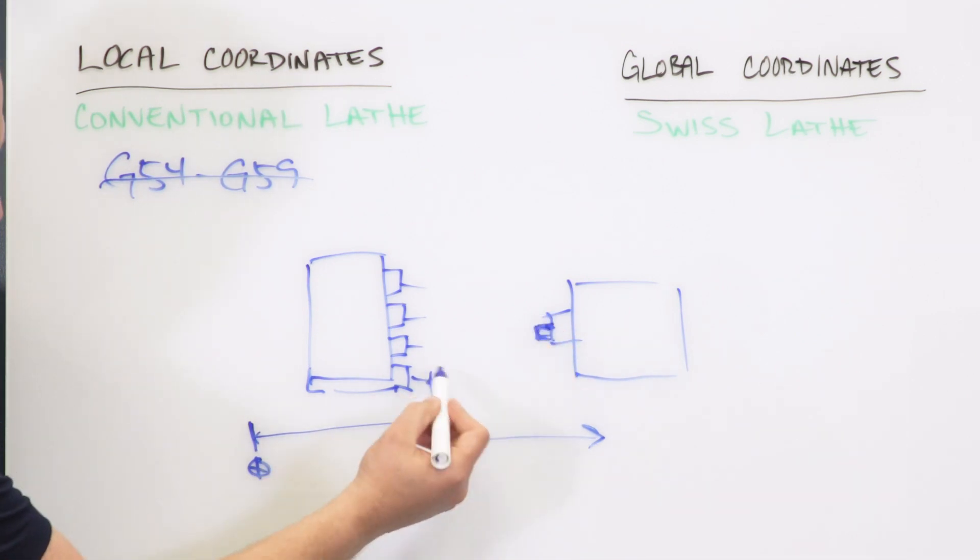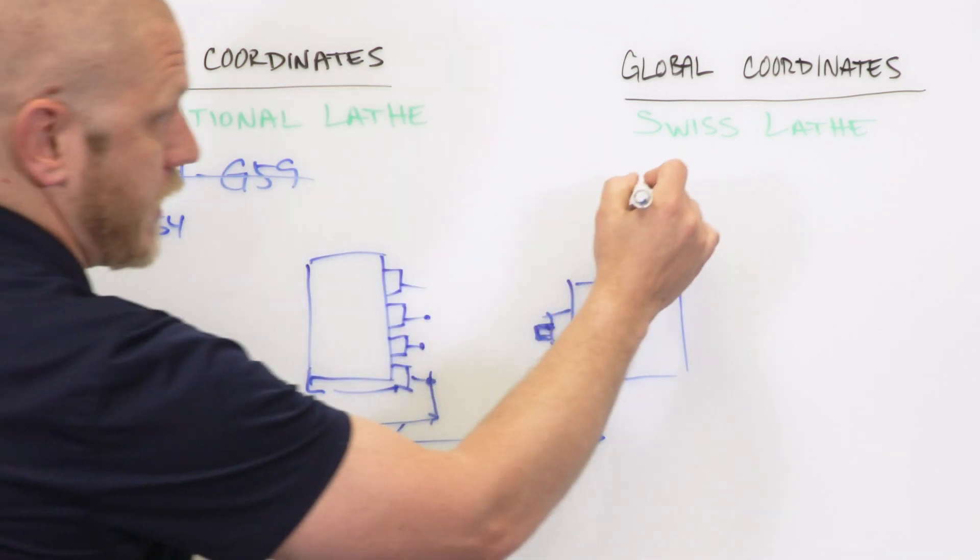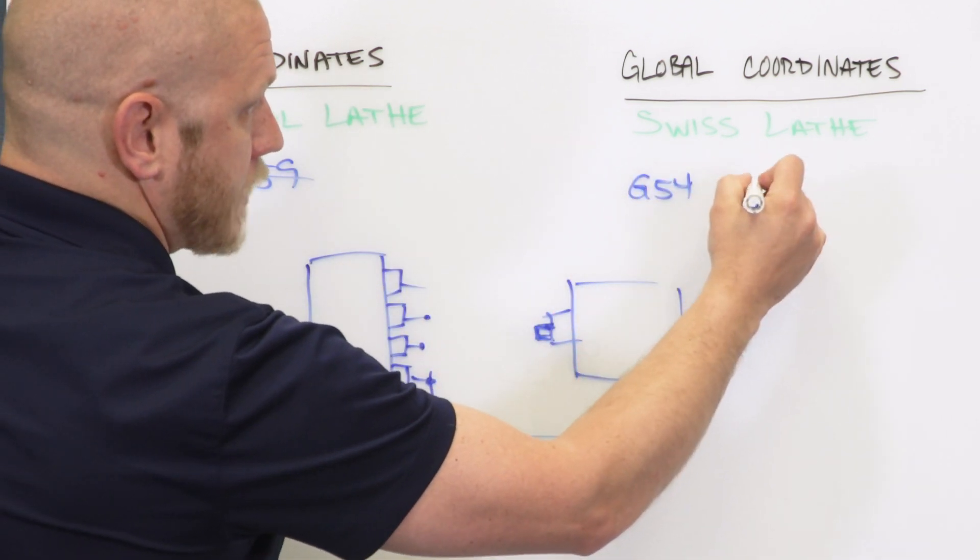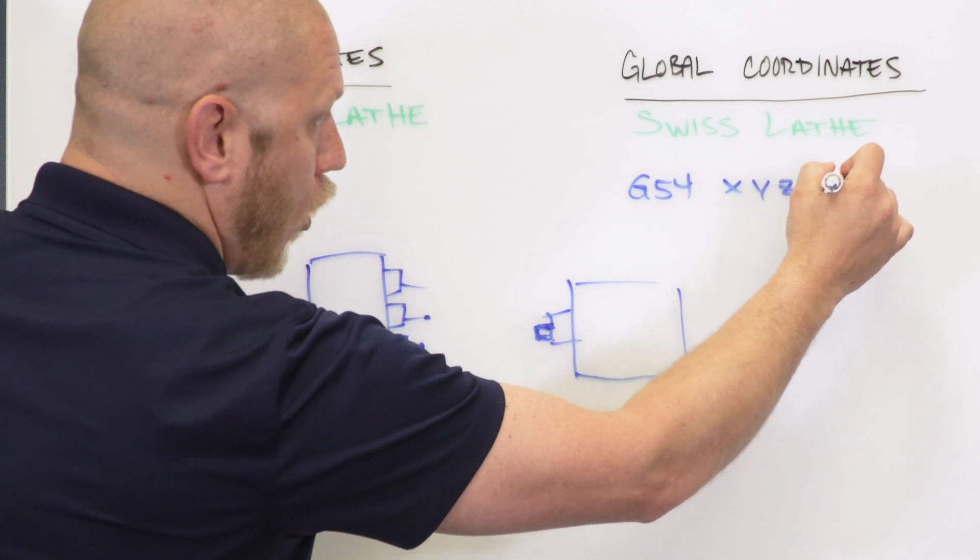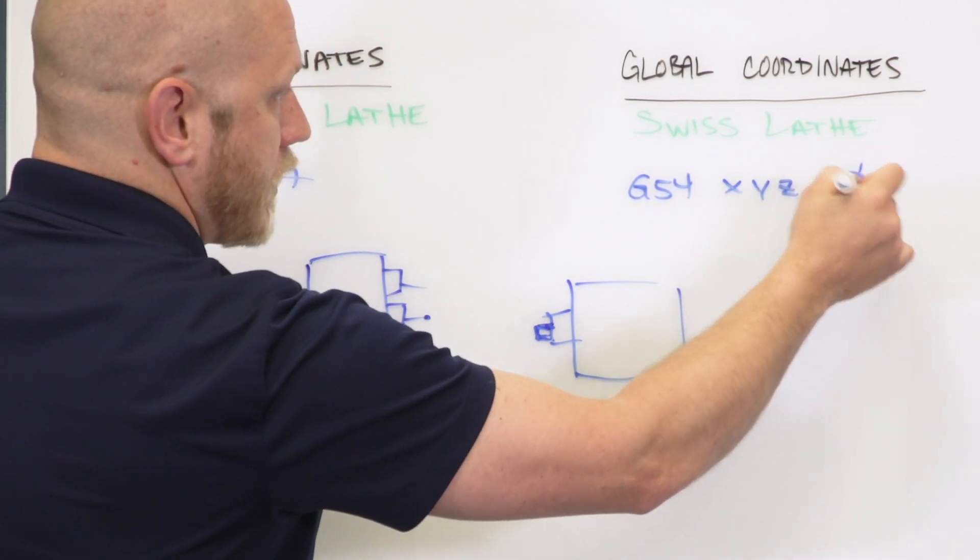Basically, your G54 on a Swiss style machine - your X, Y, Z are always zero. Always. They're always going to be zero.